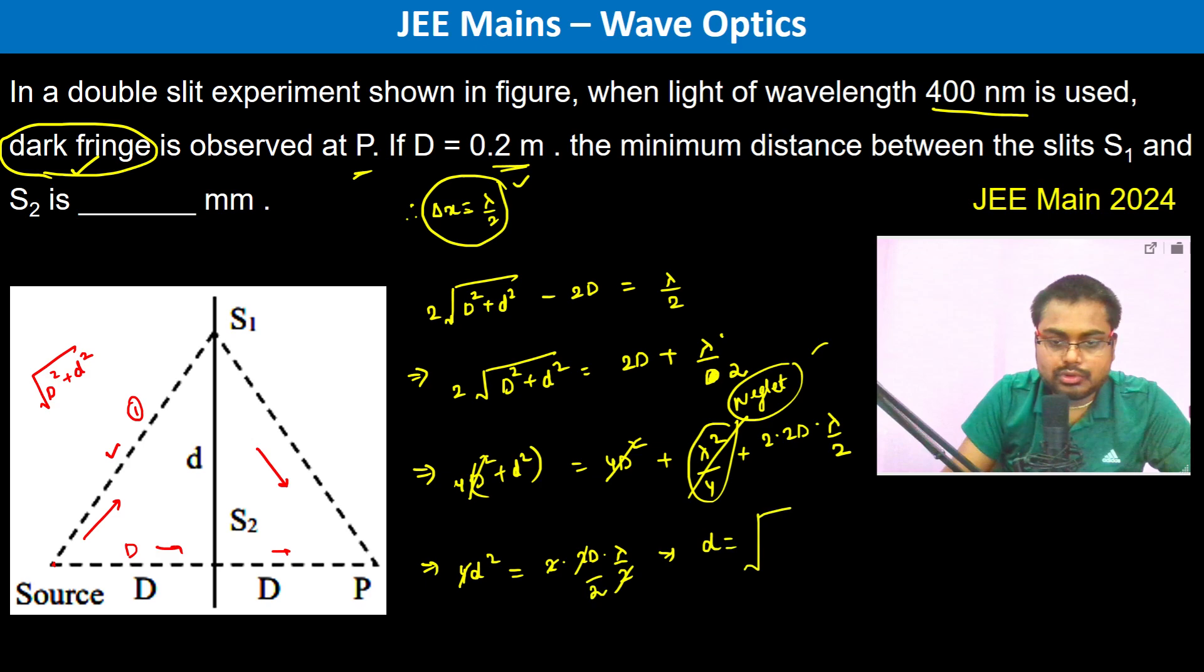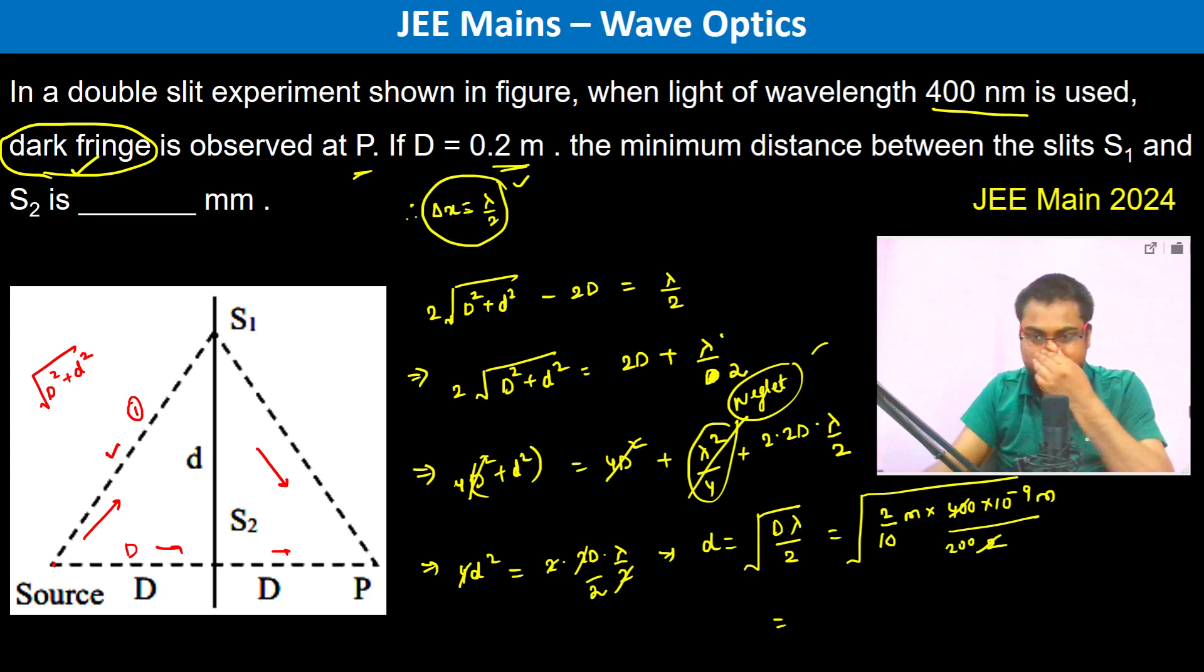So root over D capital D is 0.2 meter, so I'm writing 2 by 10 meters into lambda is 400 into 10 to the power minus 9 meters divided by 2, so this is 200. This becomes 10 to the power minus 7 to 10 power minus 8.